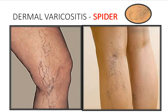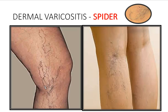Let's see the photo of the first type, which is dermal varicositis. Dermal varicositis appears like a spider and may be seen on the back of the knee or on the side of the knee. It shows thin varicosities that are branching like a spider.